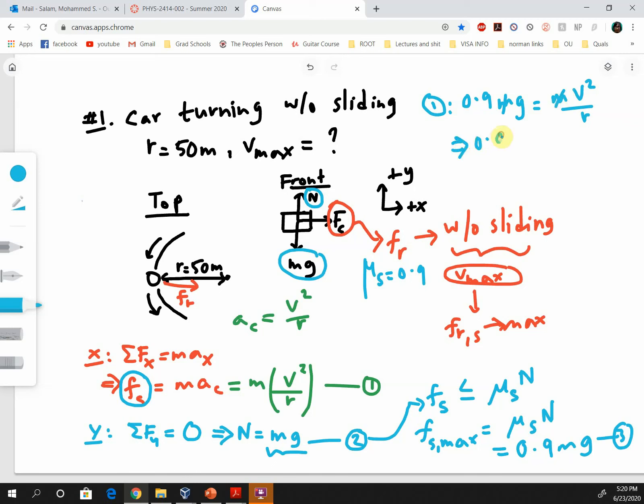We are left with 0.9 times g, which is 9.8, equal to v squared over r. We want to find what v max is. Since we are using the maximum value of friction, we will get the maximum value of the speed. So v max squared equals 0.9 times 9.8 times r. If we square root both sides, we get the maximum speed. R is given as 50, which leads to a maximum speed of 21 meters per second.